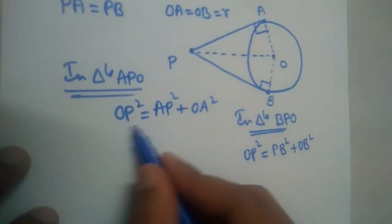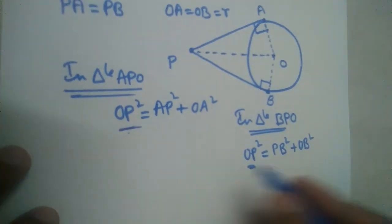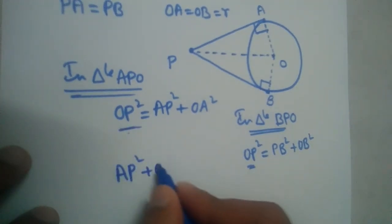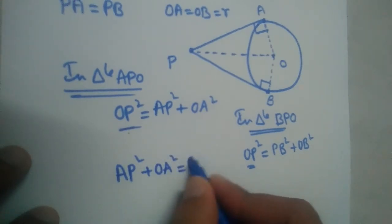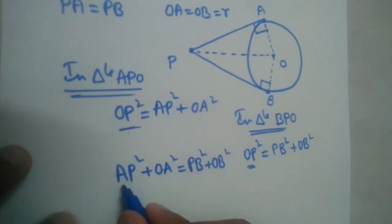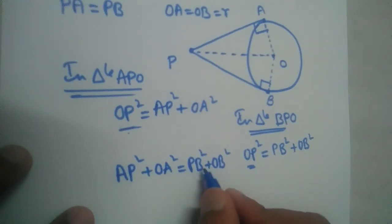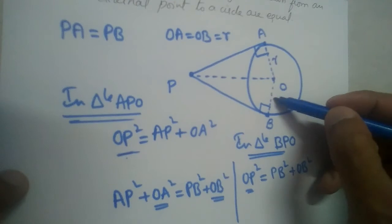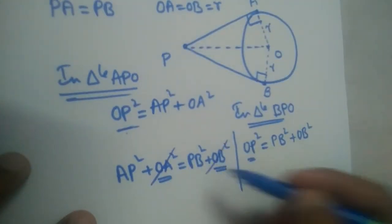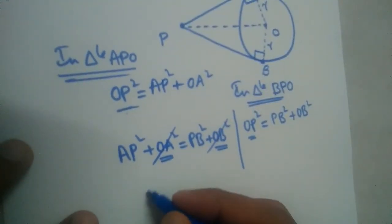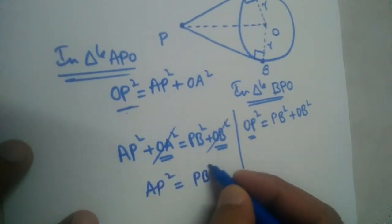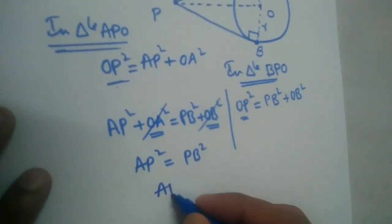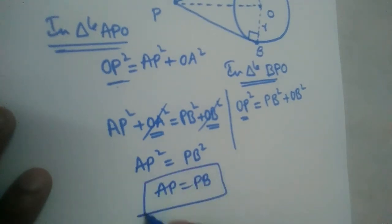So both are OP and OP right, OP square, OP square. So if we can equate this we will get, if we equate this we will get like this right: AP square plus OA square is equal to PB square plus OB square. Now, OA and OB are same because OA is R and OB is also R right. So these two will get cancelled right. Now AP square is equal to PB square which means AP is equal to PB.